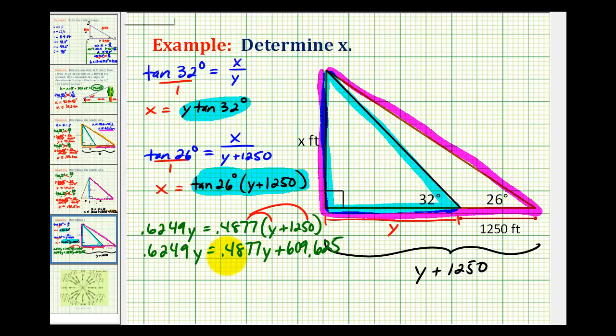Now we'll go ahead and subtract .4877y on both sides. This comes out to .1372y equals 609.625, and now we'll divide both sides by .1372.